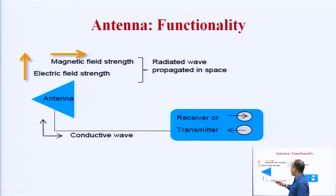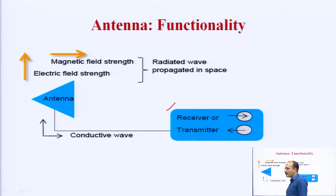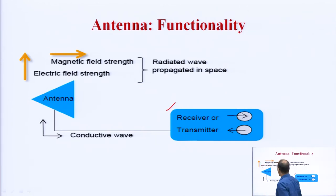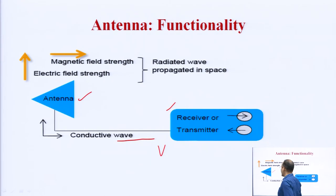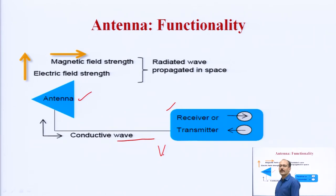Aap yahan par bahut acchi tarah se dekh sakte hain: basically koi bhi ho — transmitter ho ya receiver ho — in both cases hume antenna ka use padega. Means antenna ek aisi device hai jo aapke transmitter aur receiver dono pe kaam karti hai. Agar aap kisi electromagnetic field ke andar antenna ko place kar dein, to antenna ke across electromagnetic field generate hoga, aur uski wajah se uske other end ke upar ek voltage V induced hoga — as per the proportional of the EM field. Yeh receiver mein hoga. But when we are talking about the transmitter, tab yahan se signal apply kiya jayega, to antenna usko radiate kar dega.